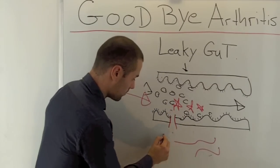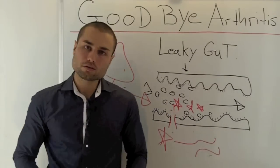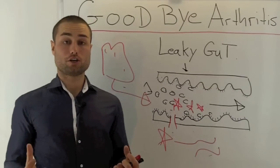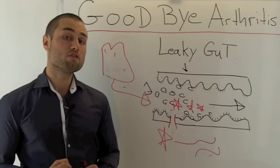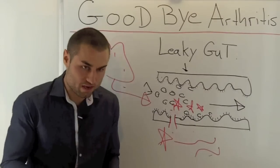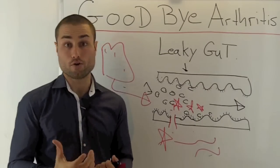So this particle, the gluten and gliadin, enters your bloodstream. And now this activates inflammation in your body. And remember, inflammation is the cause of arthritis within the joints, within your knees. This is what's happening when you have arthritis.